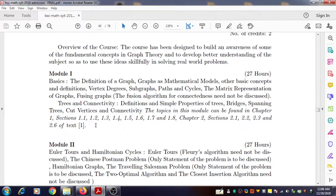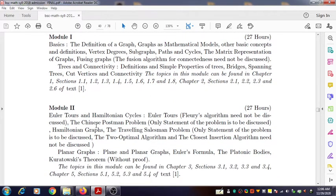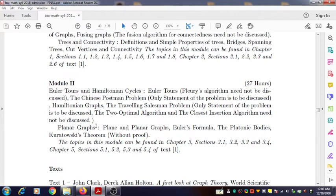The second part, named Module 2, discusses Euler tours and Hamiltonian cycles. Their definition, examples, and properties are discussed. Some algorithms related to these concepts are also included. This module is also taken from